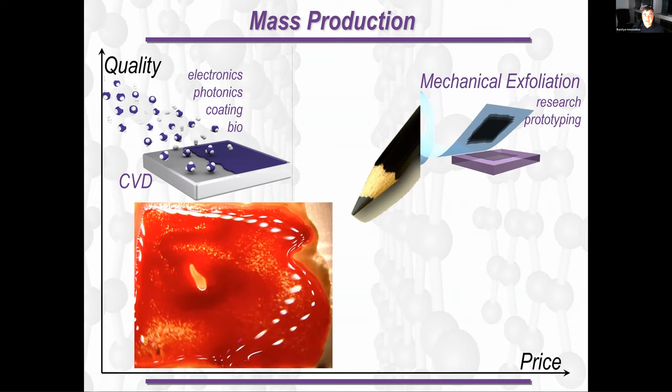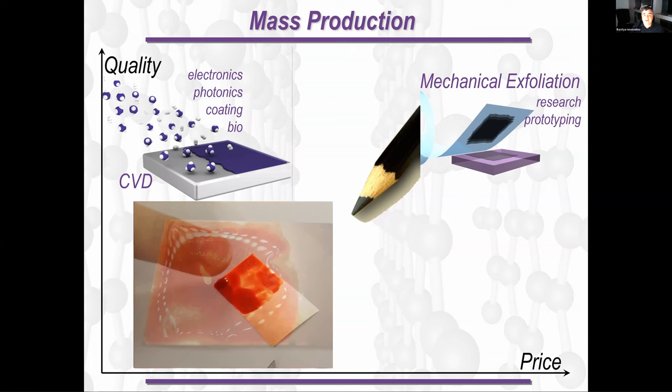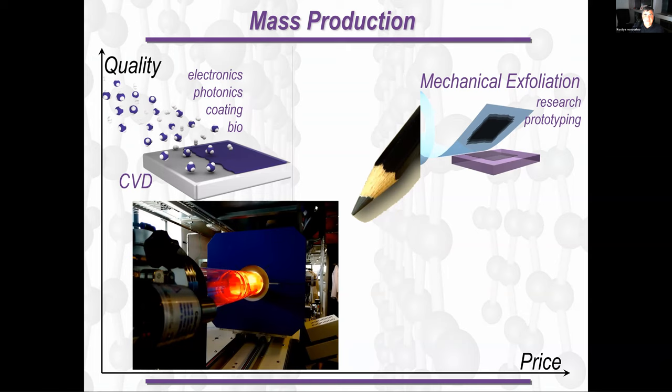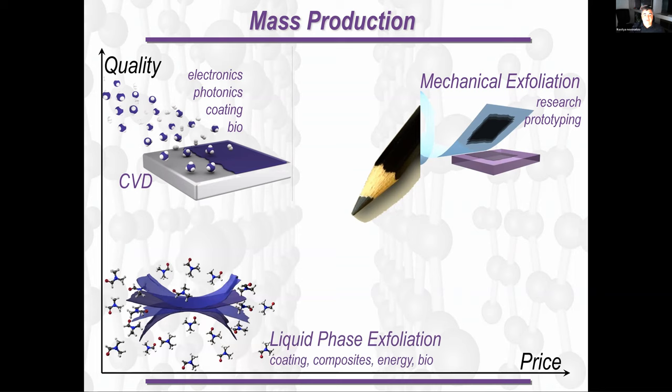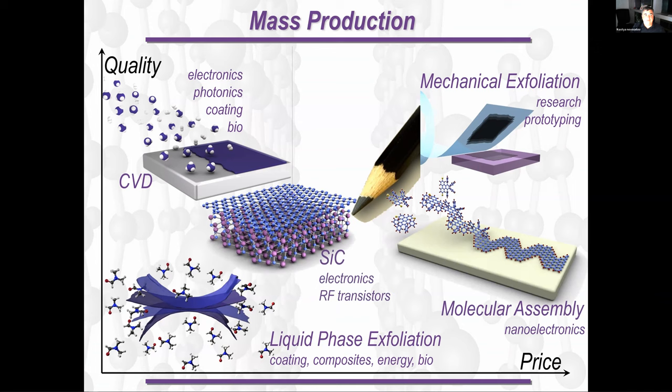Luckily, these days we have a number of other methods how to produce graphene. You can do it by chemical vapor deposition. When you run carbon containing gas like methane on top of the hot surface of a metal which has some catalytic properties. The beauty is that you can use pretty much anything, any carbon containing species to produce graphene.